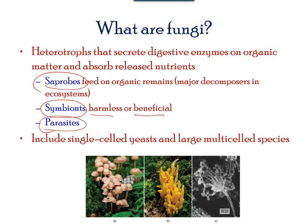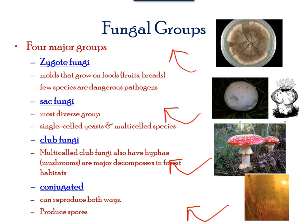Fungi are divided into four major groups based on their sexual reproduction. The zygote fungi are the common molds that grow on fruits and breads; they produce spores and are pathogens in nature.